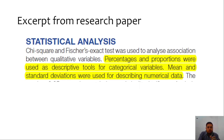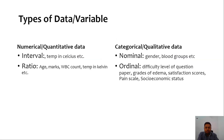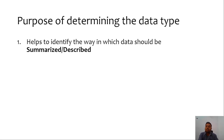Often in the statistical analysis part of a research paper you would find statements differentiating between how different types of data were summarized, which underlines the need to differentiate between data types. There is also a classification stating that there are several scales under each category: qualitative data can have a nominal or ordinal scale, as discussed earlier. Quantitative data can also have interval or ratio scale. As far as statistical analysis is concerned, we need not differentiate between interval and ratio scale — we consider it numerical — but we must differentiate between nominal and ordinal data. The first purpose of determining the type of data is that it helps identify the way in which data should be summarized or described.